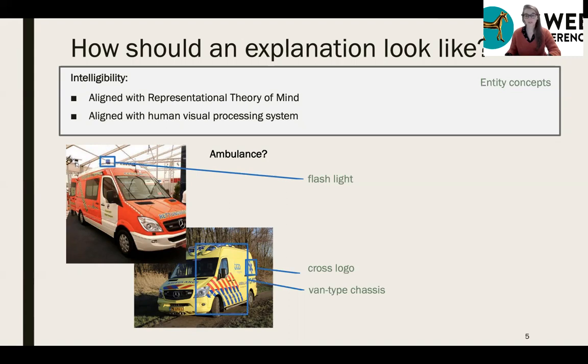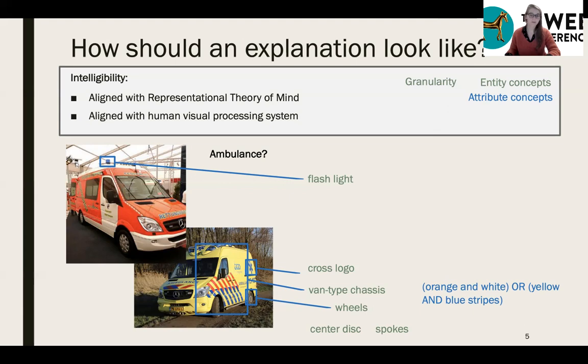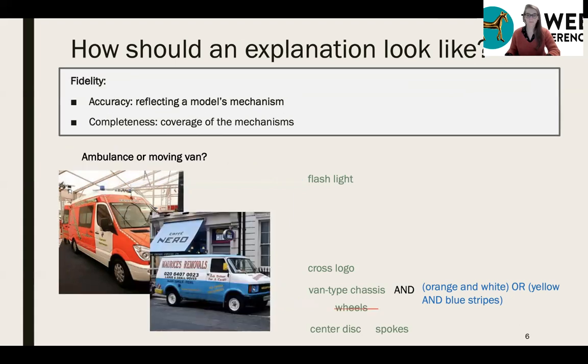These are entities, but we also might think about attributes. So for instance, the colors like the orange and white or the yellow and blue of the chassis. The concepts might be themselves composed of other entities. So the chassis must have wheels, the wheels might have spokes, etc. And this is what we call granularity, also expressed in the visual processing system. Finally, we do not only think about single concepts, but also about their combinations and their typicality. For instance, the shape of the car might be typical of ambulances, but it might also be typical of other cars, such as police cars. But combined with this color, then it becomes really typical of ambulances.